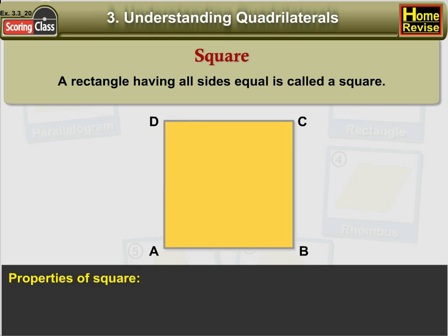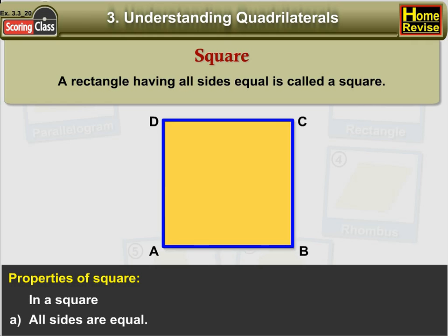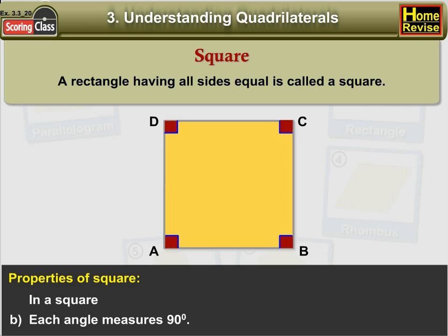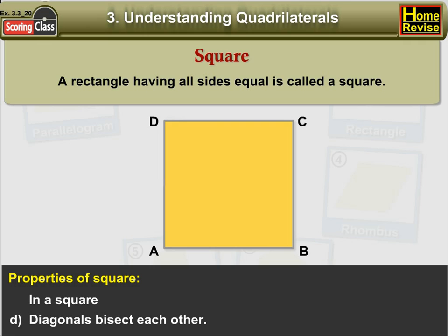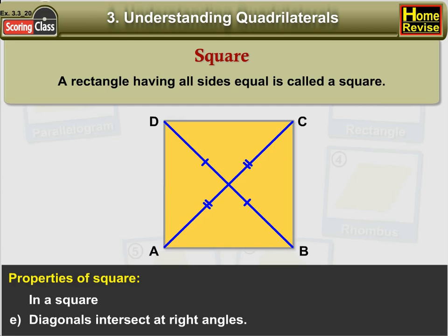Properties of a square. In a square: A. All sides are equal. B. Each angle measures 90 degrees. C. Diagonals are equal. D. Diagonals bisect each other. E. Diagonals intersect at right angles.